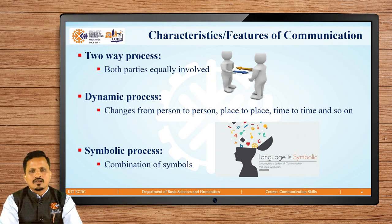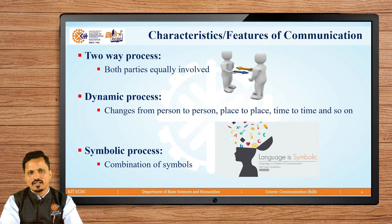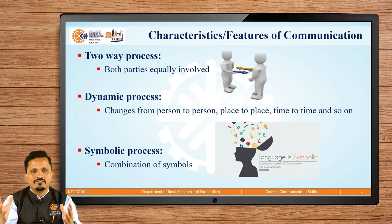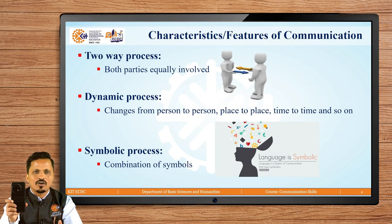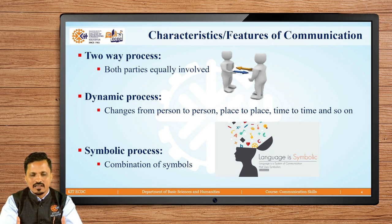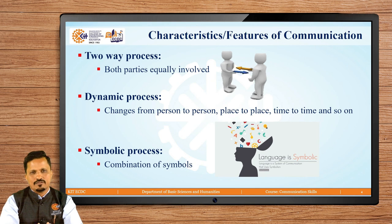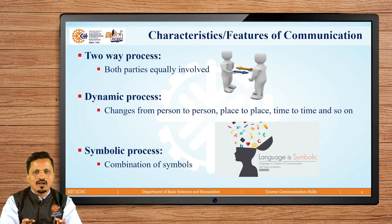Third, communication is a symbolic process. There is no inherent relation between the word we say and the object that word represents — it is completely arbitrary, just a combination of symbols. For example, why do we call a device a 'mobile'? There is no relation between the symbol and the object. The same object is called 'fan' in English and 'Pankha' in Marathi. This shows that the relation between word and object is absolutely arbitrary.